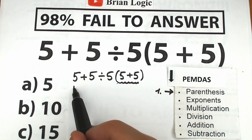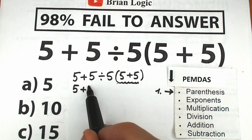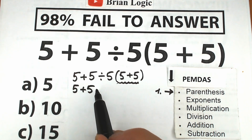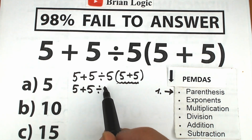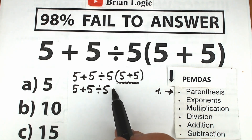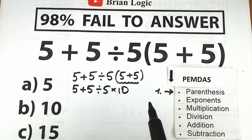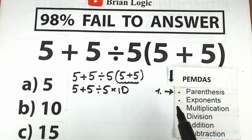So what do we have? We have 5, plus 5 divided by 5, and inside the parentheses we have 5 plus 5. If we add 5 plus 5, we get 10. So that becomes times 10.